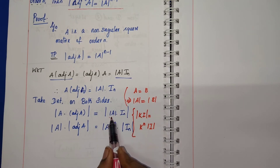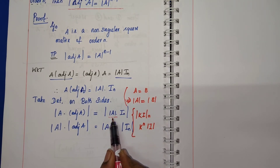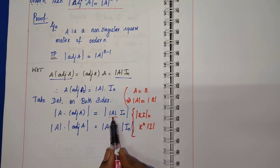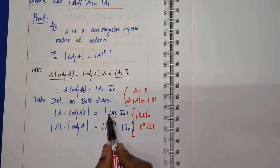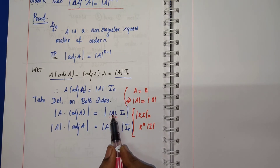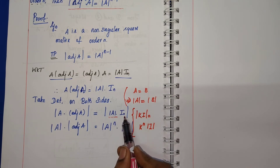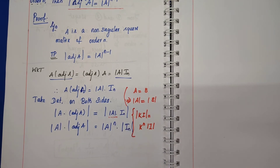Here, determinant A is a constant — it plays the role of k. So applying the result, we get determinant A whole power n. Then we also need the determinant of the identity matrix.